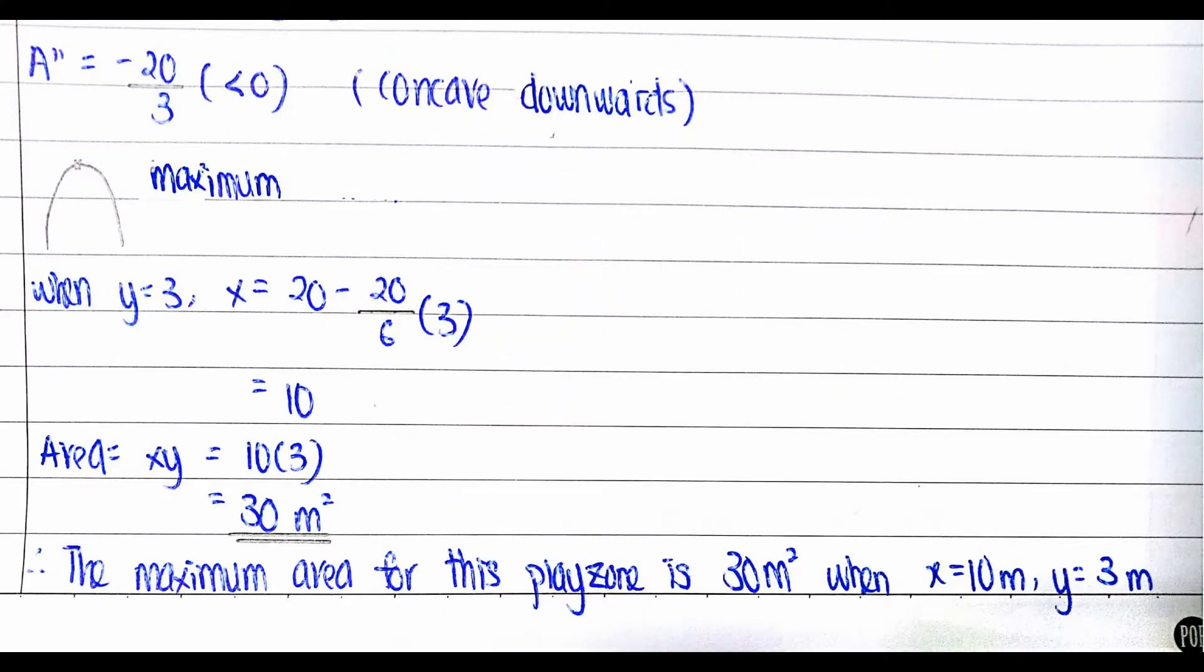After that, we carry out the second derivative of the area function. We can find that the value is less than 0, which means it is negative and concave downwards. From the graph, we can know that it is a maximum value.